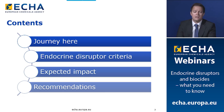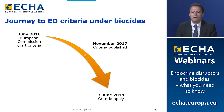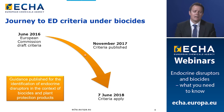Regarding the journey of the endocrine disruptor criteria: it started in June 2016 with the European Commission preparing a first draft criteria, which went through competent authorities for discussion. It wasn't until November 2017 that the criteria was agreed and published. Now in June 2018, six months after publication, the criteria becomes applicable. Thanks to the effort of EFSA, ECHA, and JRC, the guidance for the identification of endocrine disruptors has been published just in time.